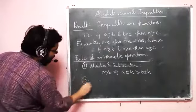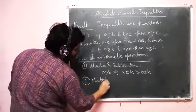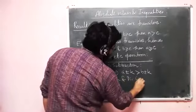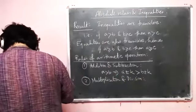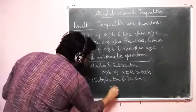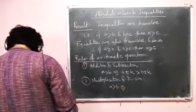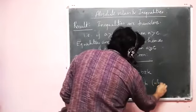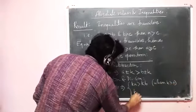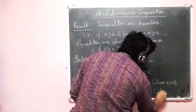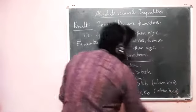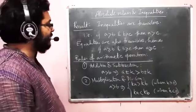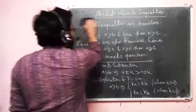The second rule is multiplication and division. If a > b, then k·a > k·b when k is positive, and k·a < k·b when k is negative. So the whole thing revolves around whether what you are multiplying is positive or negative — that's what matters.